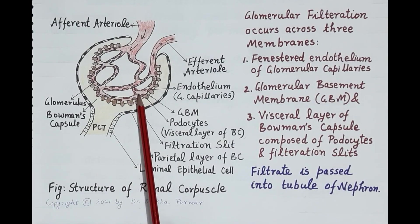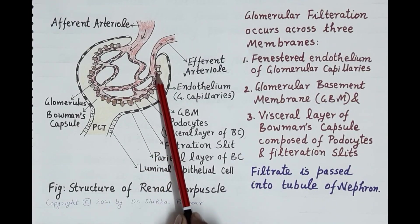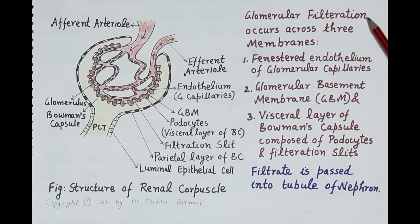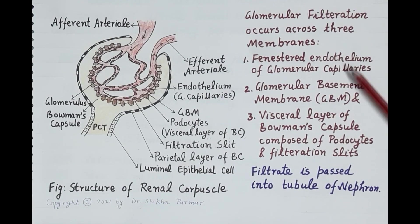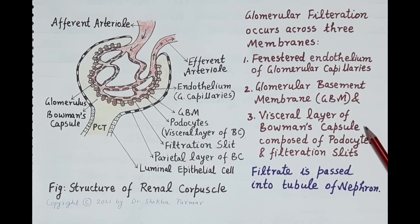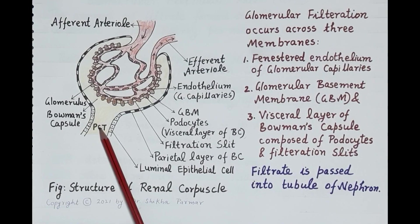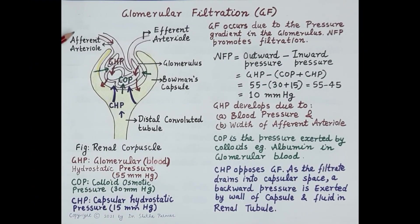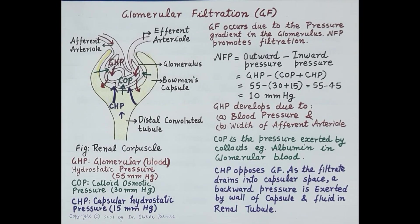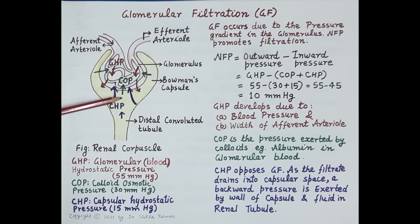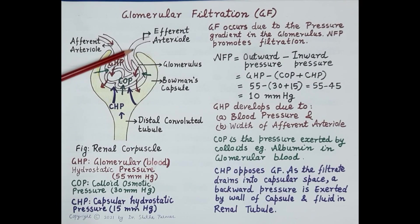Blood components that are not filtered are carried away from the glomerulus by the efferent arteriole. Glomerular filtration occurs across three membranes: the pores of the glomerular capillaries, the glomerular basement membrane, and the visceral layer of Bowman's capsule composed of podocytes and filtration slits. Once filtered, the filtrate passes into the tubule of the nephron. A renal artery branches to produce afferent arterioles, which carry blood to the glomerulus.